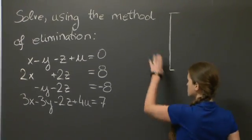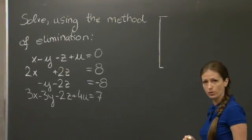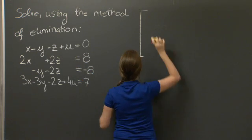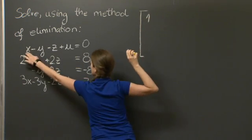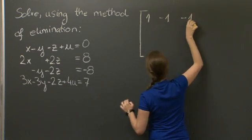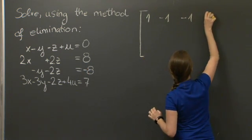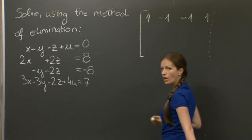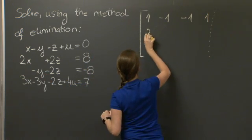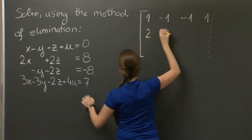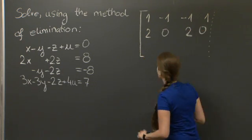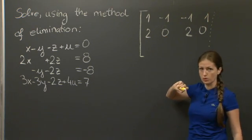So let's write a matrix. Each row is going to correspond to an equation, and each column is going to correspond to an unknown. So the first row is 1, -1, -1, 1. The second row, corresponding to the second equation, is 2, 0, 2, 0. And you want to be very careful to put zeros on the right spots here.